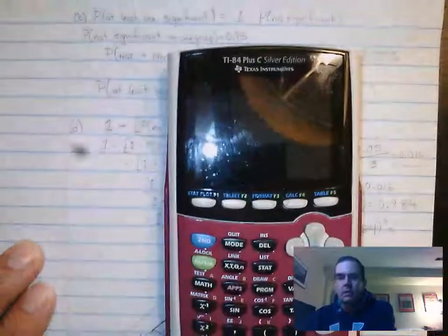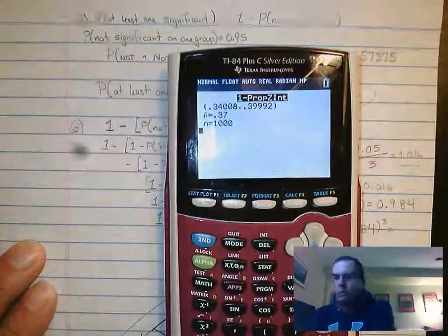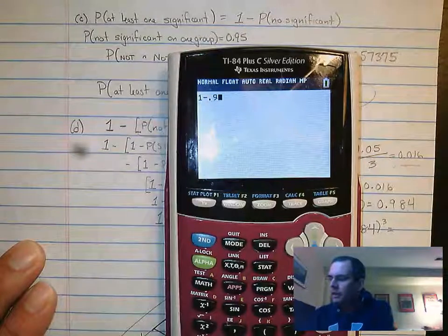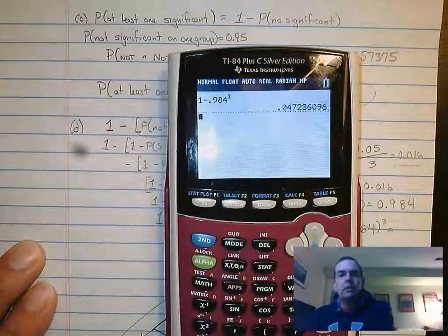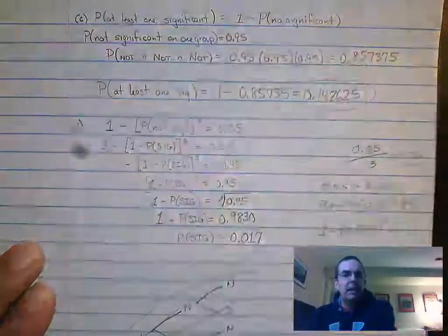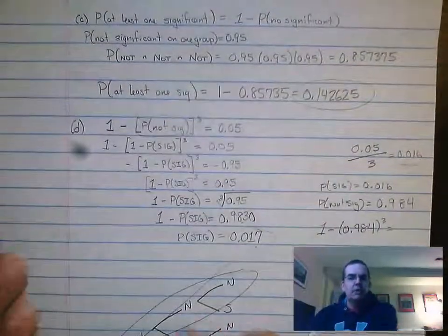So if we did that in the calculator, we do 1 minus 0.984 cubed. And that gives me a little under 5%. So I think that would be what you'd want to go ahead and do on that one.